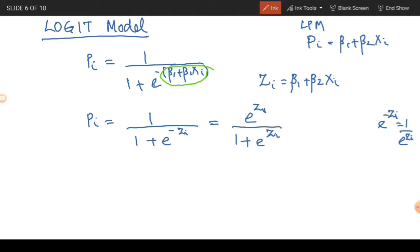So if this is the value of P_i, the value of 1 minus P_i will be equal to 1 minus e^(z_i) divided by 1 + e^(z_i). Again, if you try and solve this, you will get the answer as 1 by 1 + e to the power z_i.